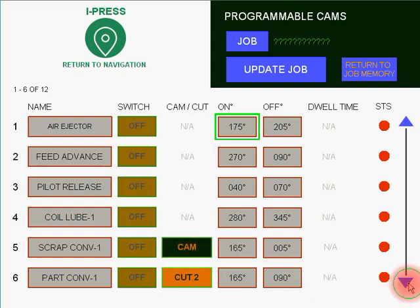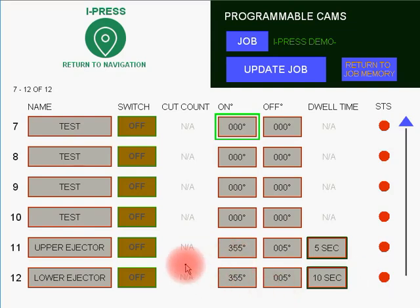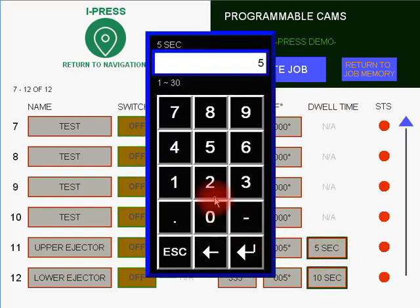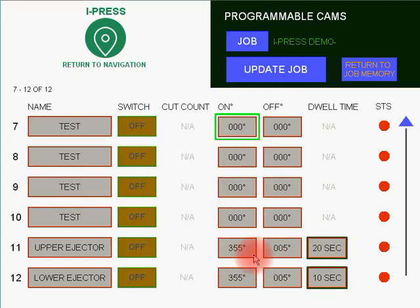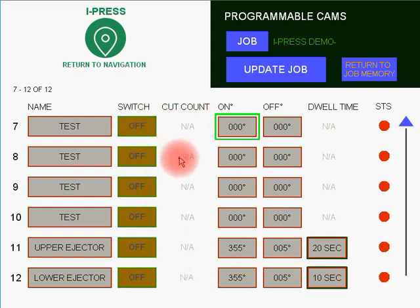When you go over to cams 11 and 12, you'll notice that these have a dwell time box that can be set for a number of seconds. This is only used for presses when an upper or lower ejector is in place, and these ejectors will only activate when the slide is stopped at the top of the stroke. In the case of some of our clients that make aerospace bolts, they want the press to cycle and return to top, and then the lower ejector will wait 10 seconds before ejecting the part up from the bottom.